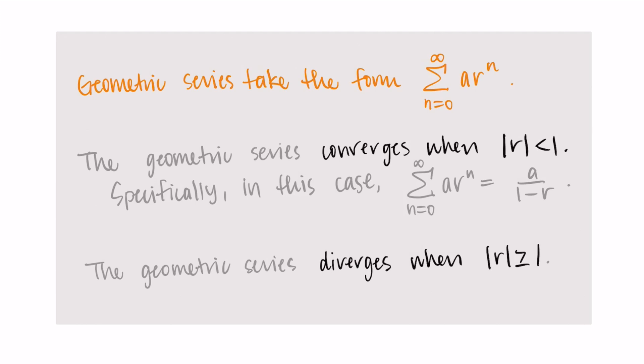However, whenever the absolute value of r is greater than or equal to 1, we get divergence. So the geometric series diverges in these cases.